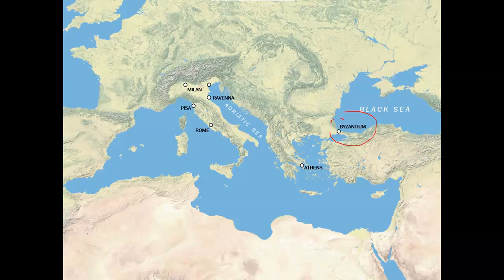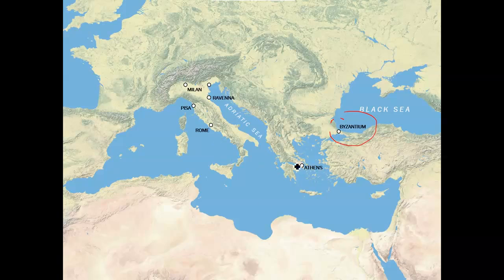The eastern empire continued to prosper even more than the western, though both were subject to political turmoil. This political scenery also corresponds with the establishment of Christianity in Europe. From Byzantium, due to its strategic position and proximity to the East and other cultures, we see the rising of a new style of architecture — ecclesiastical, an early Christian type — whose techniques and influences eventually spread back to the west, particularly in northern Italy and on the western shores of what is formerly known as Yugoslavia.